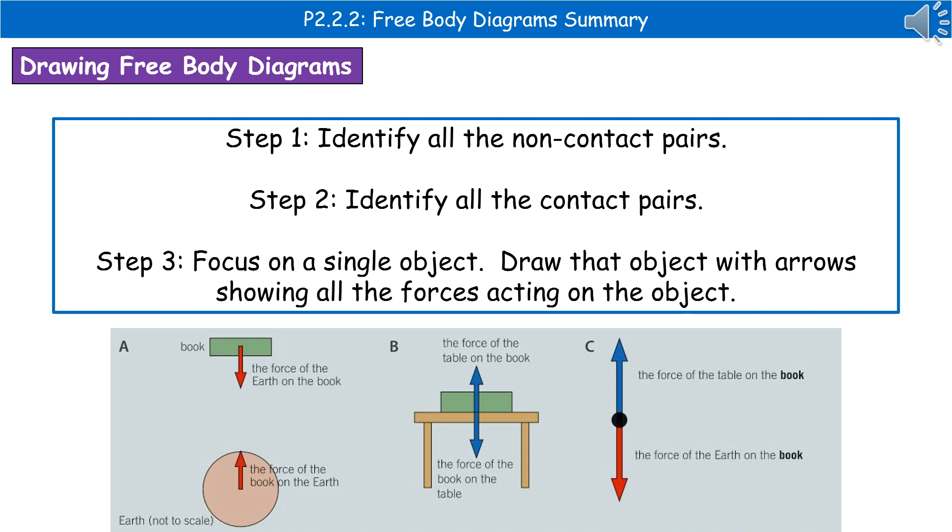Step one, we need to identify all the non-contact pairs. In the example I've given you there of a book, it's the force of the earth on the book and the force of the book on the earth. So that's our non-contact pair. It's the only one.